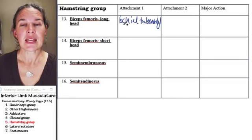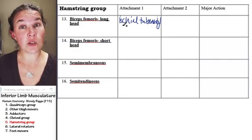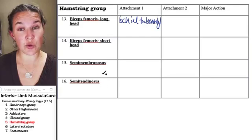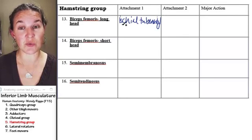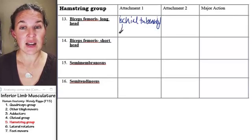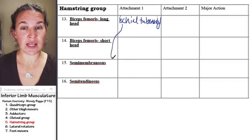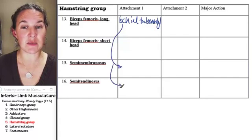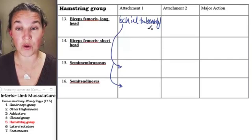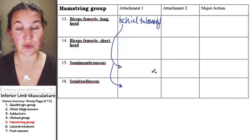So now I said that almost all of these, this group attaches to the ischial tuberosity, and in fact, all except the short head of biceps. So semimembranosus and semitendinosus both also attach to the ischial tuberosity.